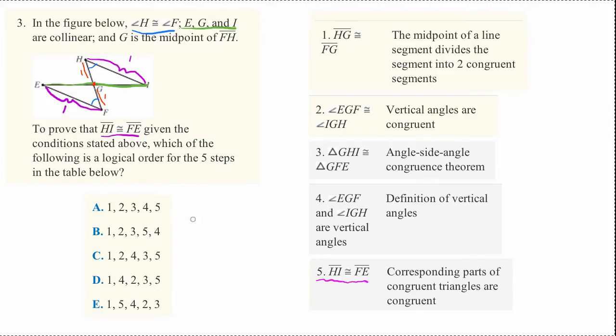And this eliminates a lot of possibilities. Because in B here, the last step is four, but it should be five. In E here, the last step is three, and it should be five again.